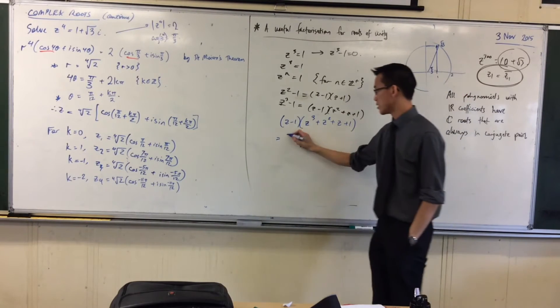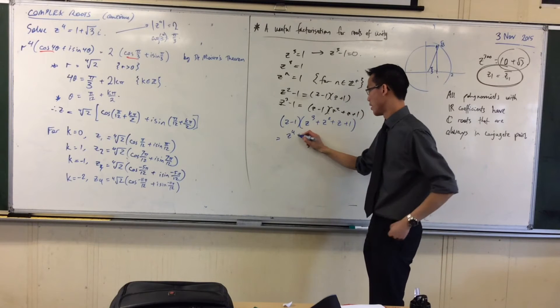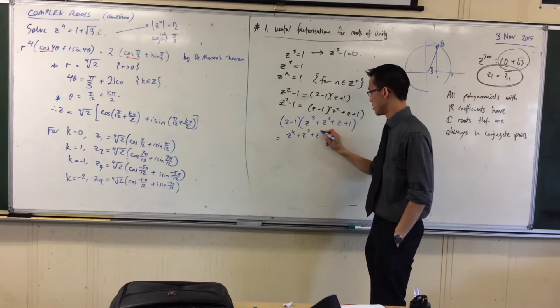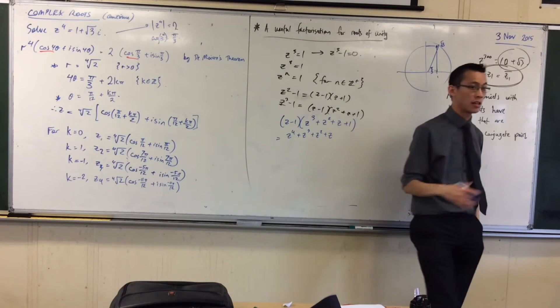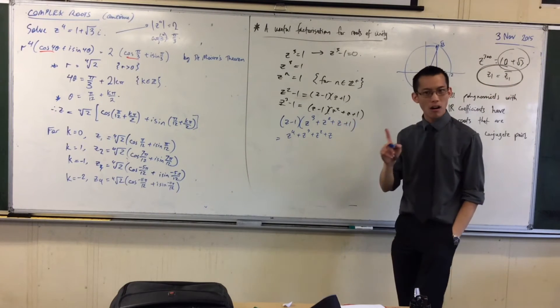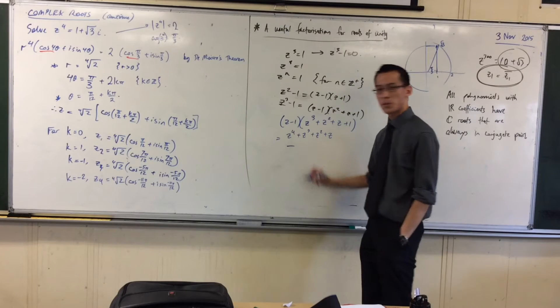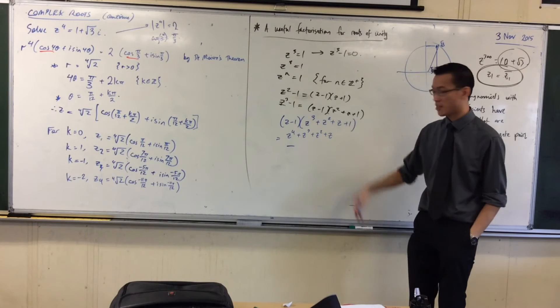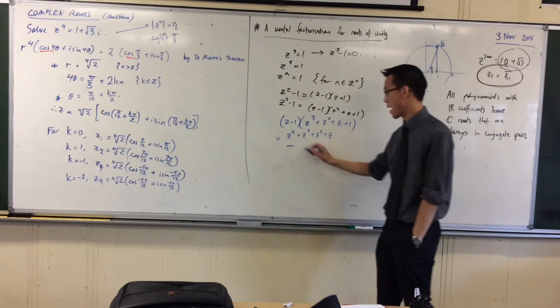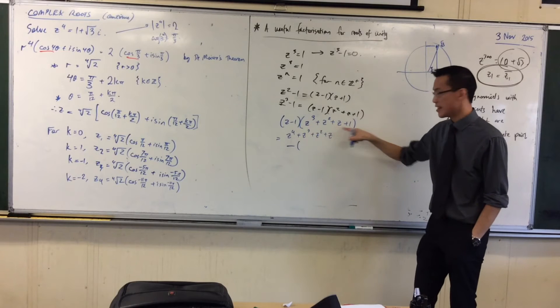z times all of these guys, right? It's going to be z to the 4, z cubed, z squared, plus z, all by z. And then, oh, hold on a second. What you subtract, and I'm going to write it underneath because it'll make the parallel more obvious, is this and this and this and this, right? It's all of these guys.